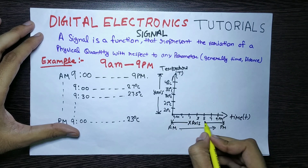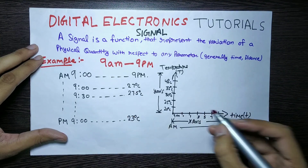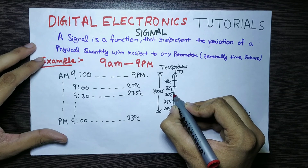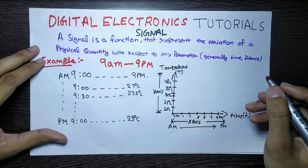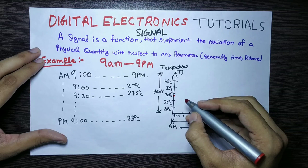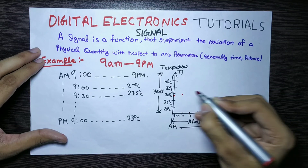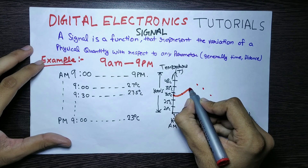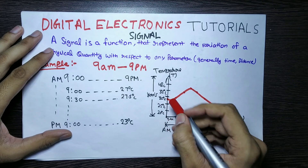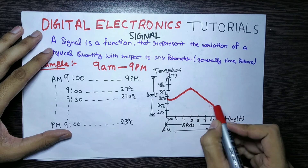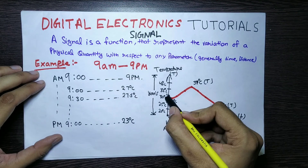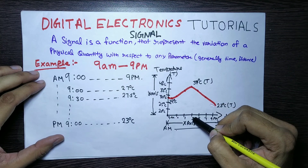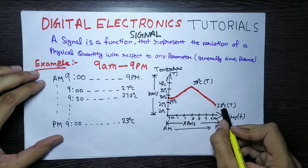Our time starts from 9am and ends at 9pm. At 9am we have 27 degrees Celsius, and at 9:30 we have 27.5 degrees — a minor change. As the day goes on, the temperature rises, and as sunset approaches, the temperature goes down. At 11am we have 30 degrees Celsius, at 10am 29 degrees Celsius, at 3pm 37 degrees Celsius, and at the end of the day at 9pm we have 33 degrees Celsius.